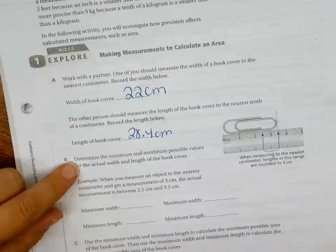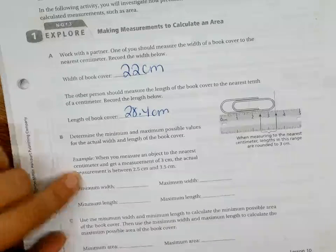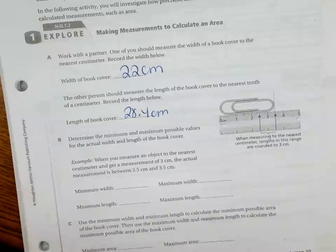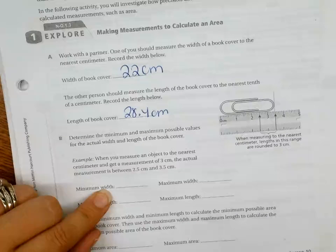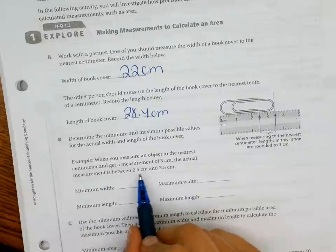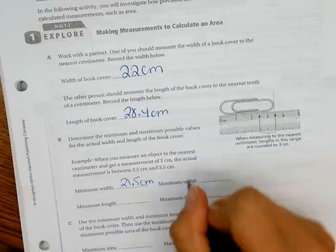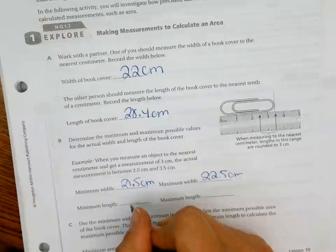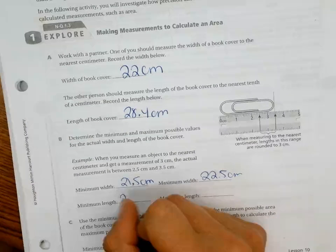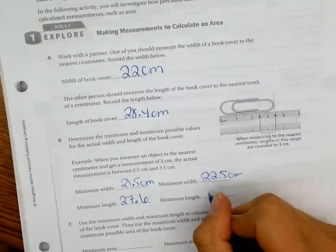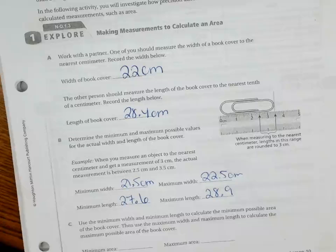Determine the minimum and the maximum possible values for the actual width and length of the book cover. For example, when you measure an object to the nearest centimeter and get a measurement of three centimeters, the actual measurement is between 2.5 centimeters and 3.5 centimeters. So what do we get for the minimum width? They're basically saying to go like a half a centimeter in each direction, right? So what are we going to do? Twenty-one point five to twenty-two point five. And the length, we could say what? Twenty-seven point six to twenty-eight point nine. We're going half a centimeter in each direction, right?